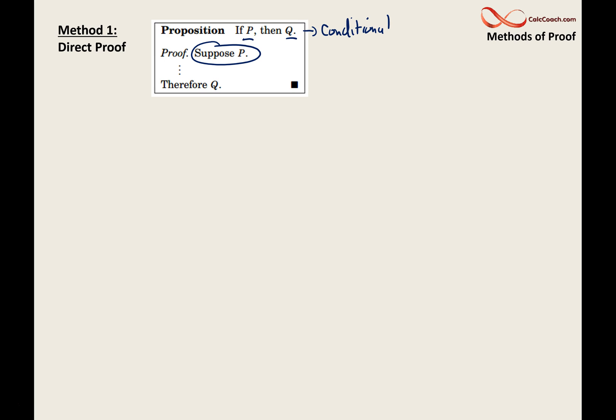They both are examples of the direct proof. When you have a theorem, not always, but often, it's written in the form that is called the conditional. If P, then Q. So, for direct proof, what you do is you start with P, who is the hypothesis, you chain together logical, mathematical statements, and you end up with the conclusion, Q.